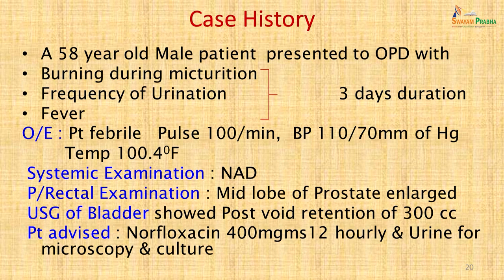Case presentation: a 58-year-old male presented in the OPD with burning micturition, frequency of urination, and fever of three days' duration. On examination the patient was febrile with pulse 100 per minute, blood pressure 110/70 mmHg, and temperature 100.4°F. Systemic examination showed no abnormality, but per rectal examination revealed mid-lobe enlargement of the prostate. USG showed post-void retention of 300 cc.